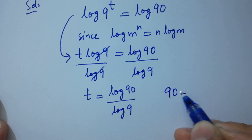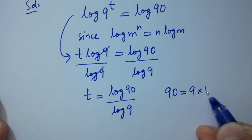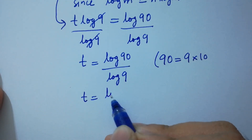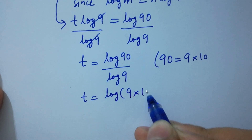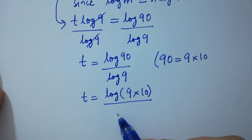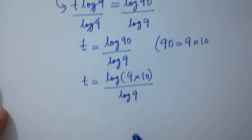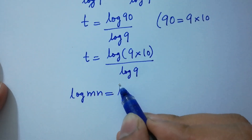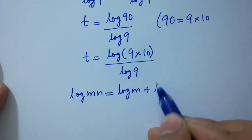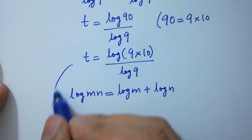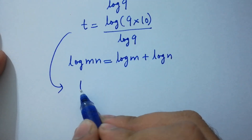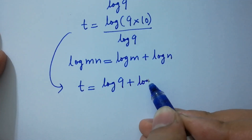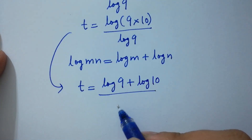90 is equal to 9 times 10, so t will be equal to log(9 times 10) over log 9. Using log mn equals log m plus log n, t will be log 9 plus log 10 over log 9.